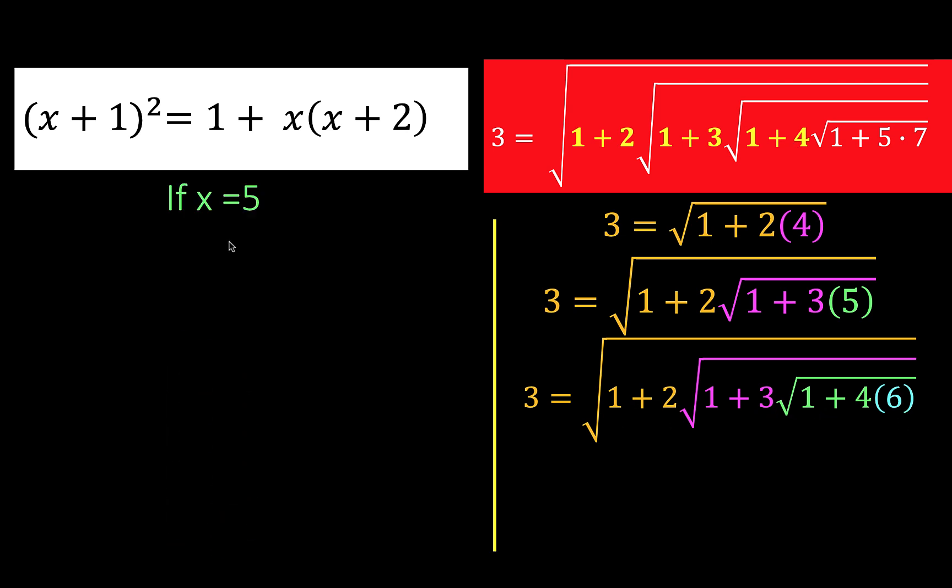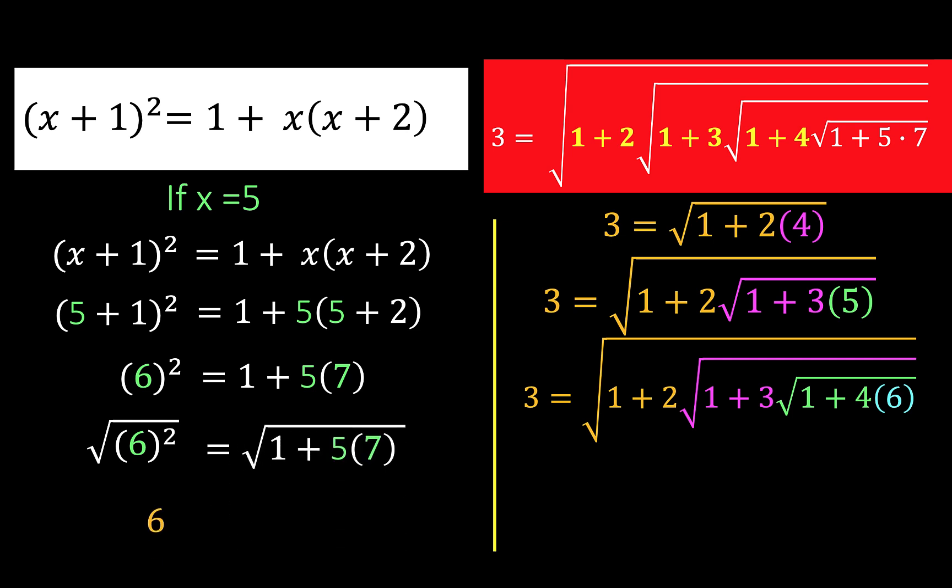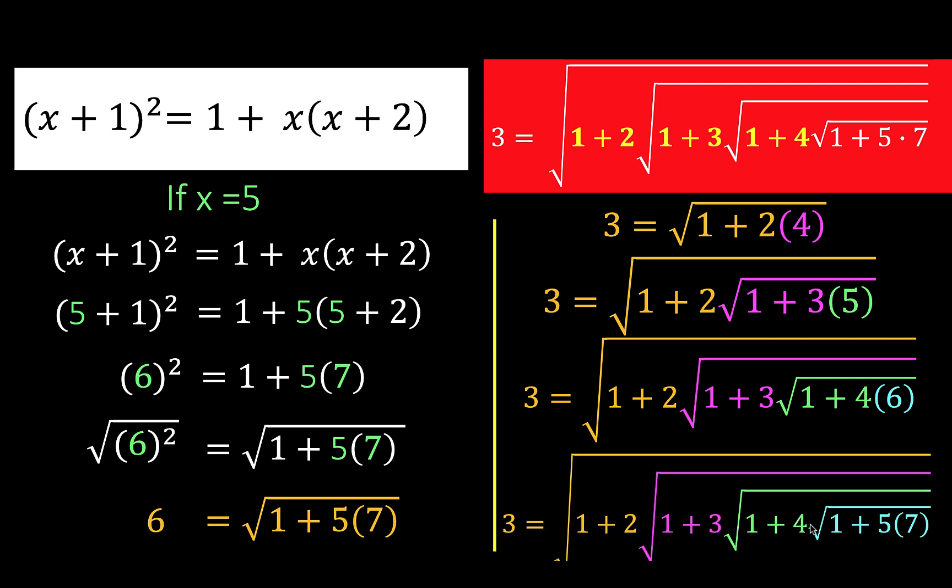Then let's expand this 6 this way. Let x be equal to 5 and substitute that in the original square binomial. To arrive at this result, we have 6 equals the square root of 1 plus 5 times 7. So replace this 6 by this radical. And notice now that the results we have here, this last equation, and the original equation that we are trying to approximate, are exactly the same.